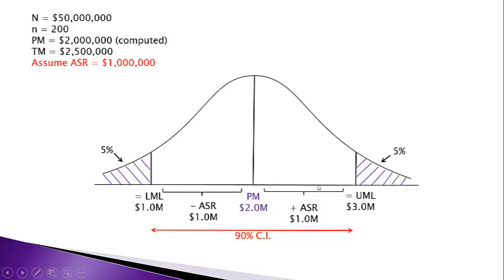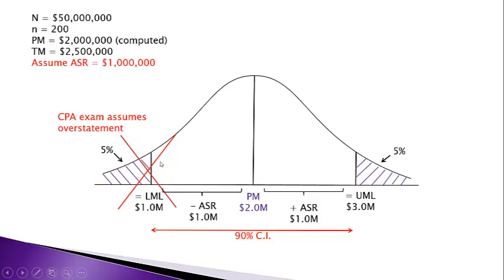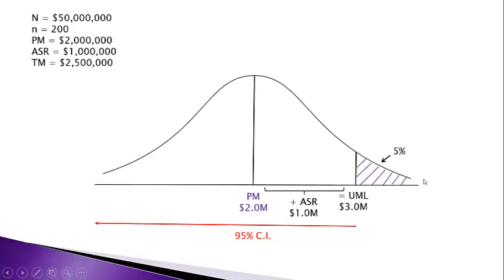An account could be overstated or understated. However, on the CPA exam, to be consistent with attribute sampling, the exam assumes that all misstatements are overstatements. As a result, we can ignore the lower tail. In real life there can be understatements, but for this analysis — parallel to attribute sampling — we ignore the lower bound. Therefore, we are 95% confident that the true but unknown amount of misstatement is $3 million or less, looking at a 5% upper tail.